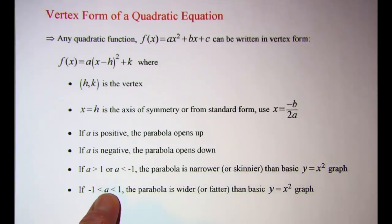If a is a fraction between negative one and one, then the parabola will be wider or fatter than the basic graph of y equals x squared.